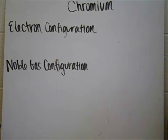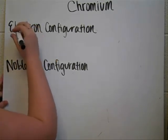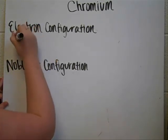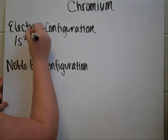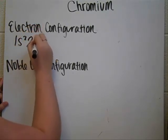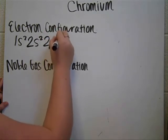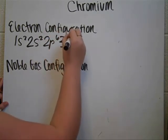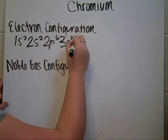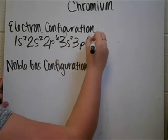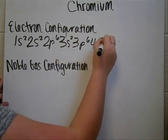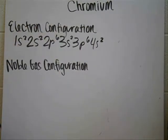All right, so you do the electron configuration for chromium. And you would start off by going with your groups that you know are already filled. So that would be 1s2, and then you go in, it's 2s2, 2p6, 3s2, 3p6, and then you go to 4s2. And then you notice, hey, it actually goes into the d category.